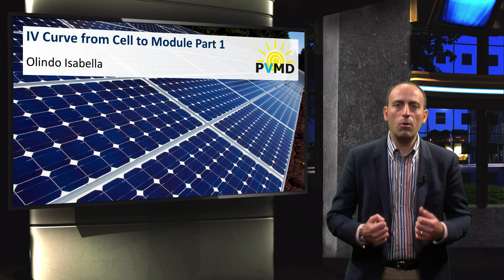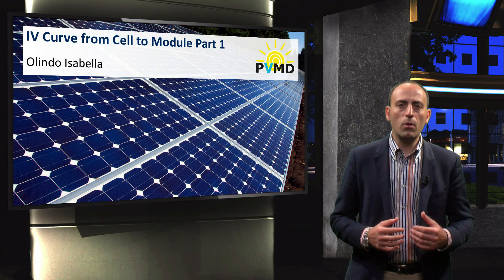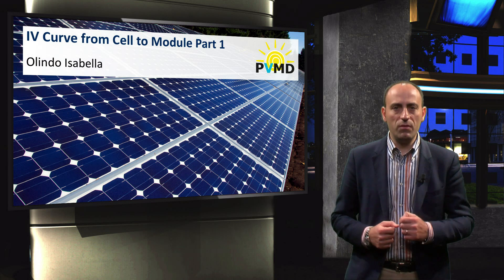In the previous video, we discussed how multiple solar cells are connected to make a module. Now we will look at the characteristic IV curve of such a PV module.